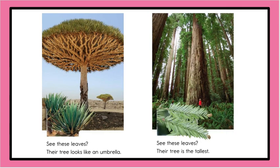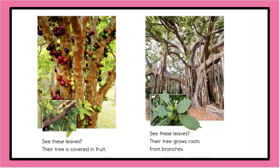See these leaves? Their tree is the tallest. See these leaves? Their tree is covered in fruit. See these leaves? Their tree grows roots from branches.